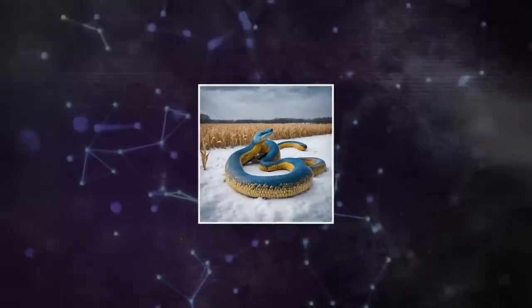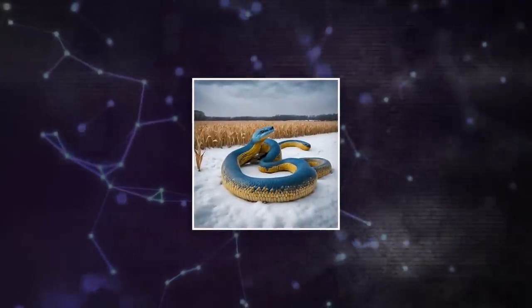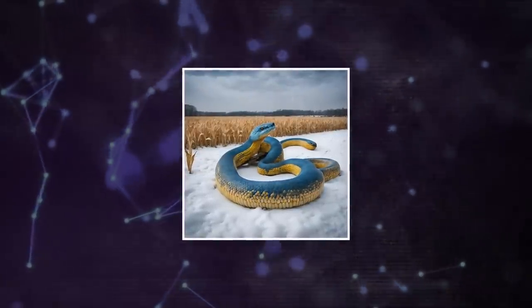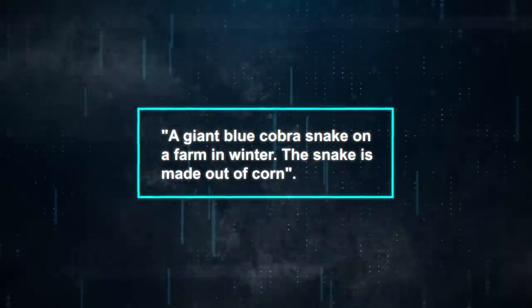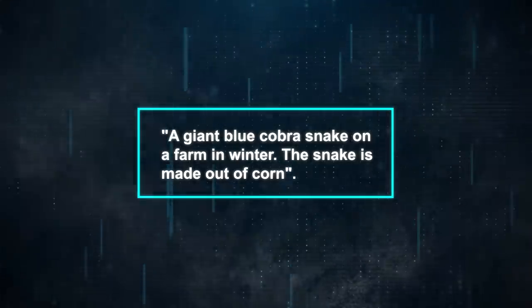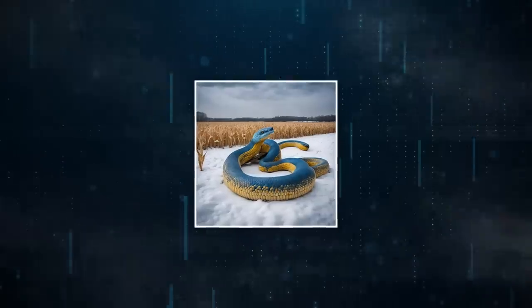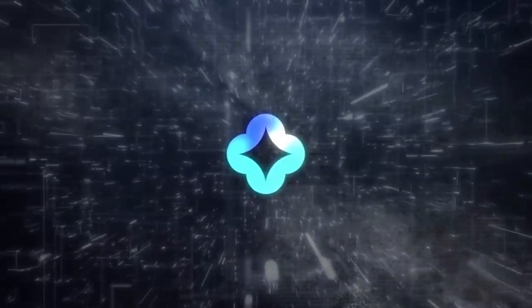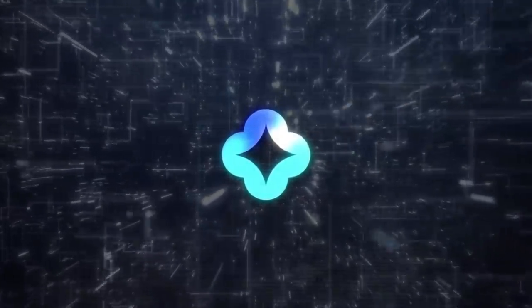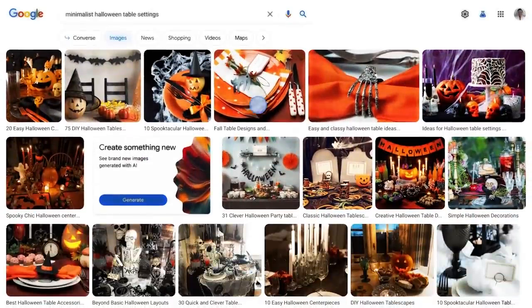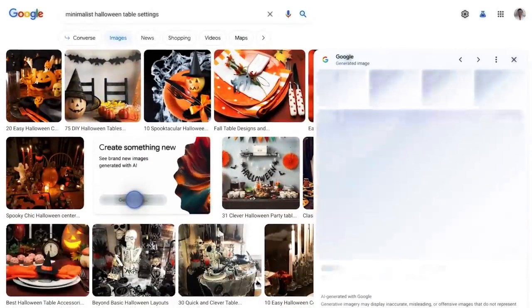Should you wish to alter the image — maybe having the snake in blue or depicting the farm in winter — it's a breeze. Just add or change details in your query. For instance, entering 'a giant blue cobra snake on a farm in winter, the snake is made out of corn' will give you a new image, now with a blue snake and a snow-covered farm while maintaining the corn texture. SGE provides substantial control and flexibility in image generation, and the AI model strives to produce an image aligning with your description.